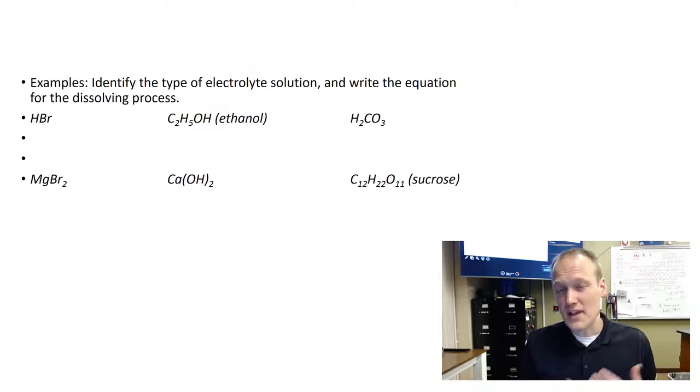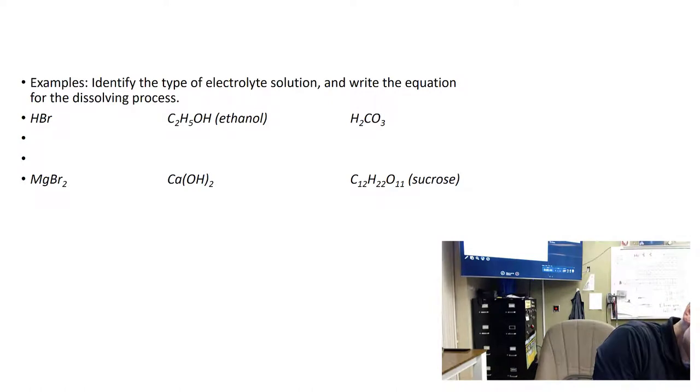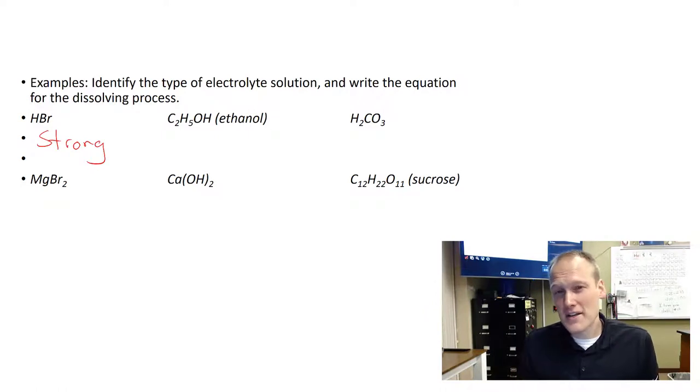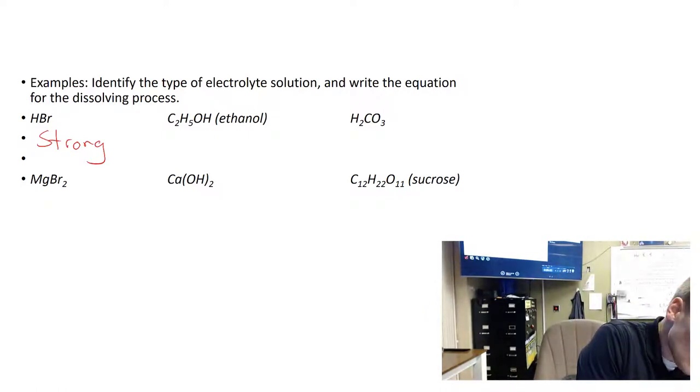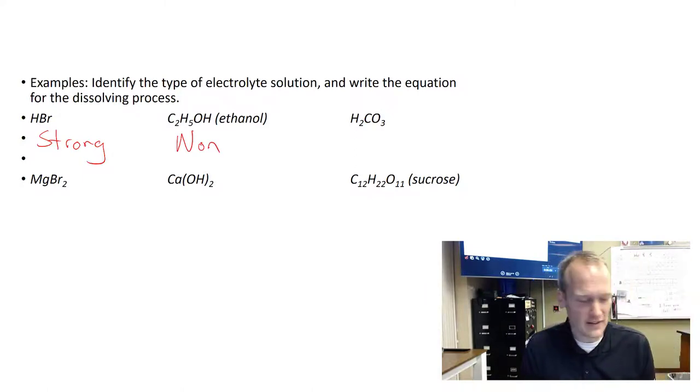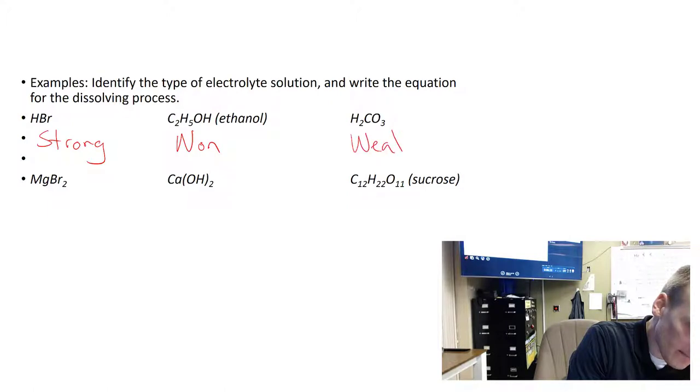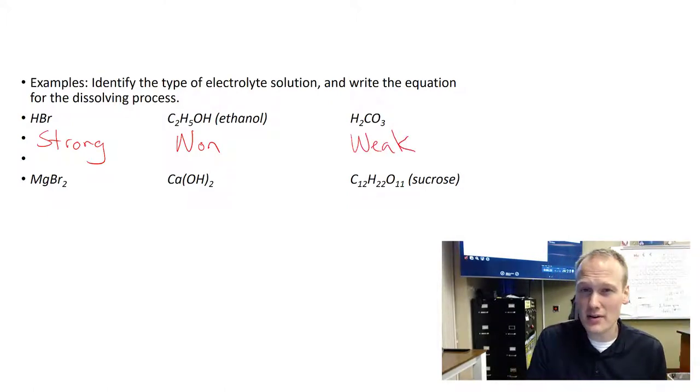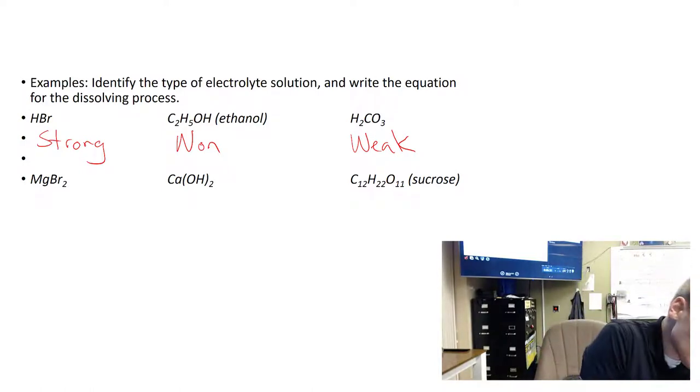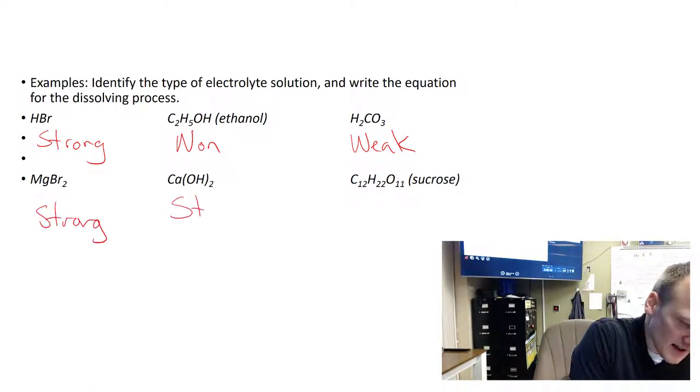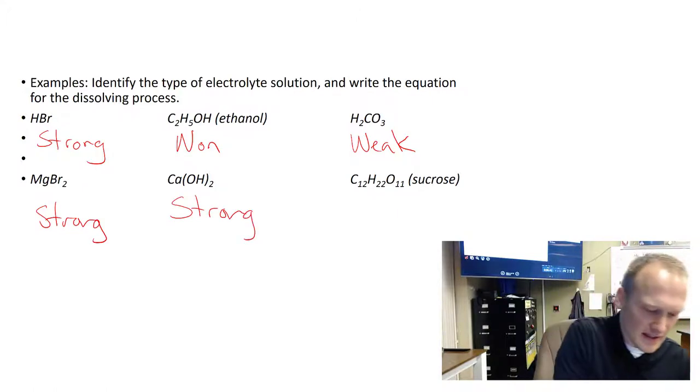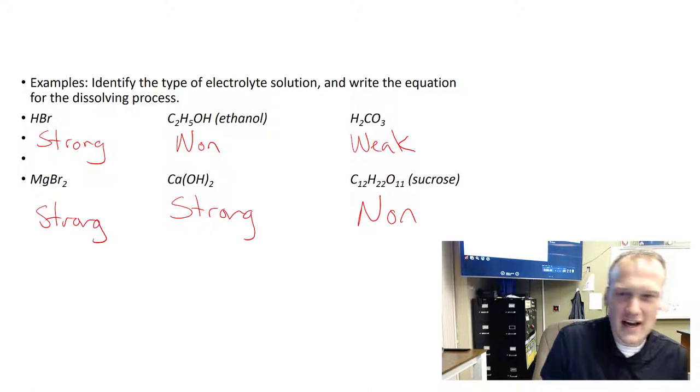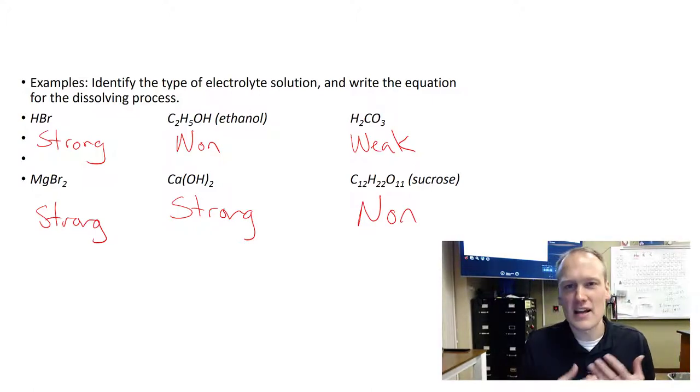Let's look at these six examples. HBr is one of the seven strong acids, so this would be a strong electrolyte. Ethanol is an alcohol, you can tell because of the O-L ending, so it's a non-electrolyte and won't dissociate at all. H2CO3 carbonic acid is an acid but not one of the seven strong acids, so this would be a weak electrolyte. MgBr2 is an ionic compound because we have a metal cation and a non-metal anion, making this a strong electrolyte. Calcium hydroxide is also ionic so therefore it would be strong. And finally we have a sugar, which will not dissociate in water and therefore would be a non-electrolyte.